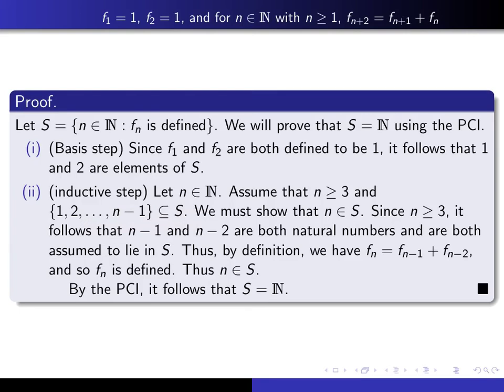So since n is bigger than or equal to 3, it follows that n minus 1 and n minus 2 are both natural numbers. Because 3 minus 2 and 3 minus 1 are both natural numbers, and if n is bigger than 3, that's even easier to notice. And they're both assumed to lie in S. That's the assumption here.